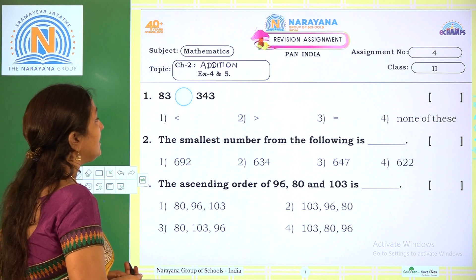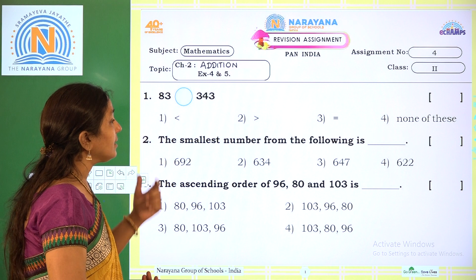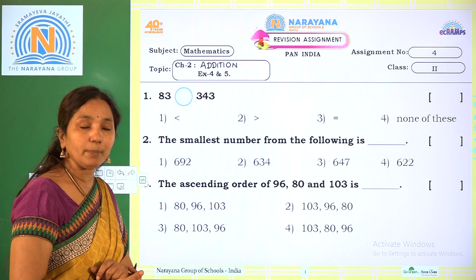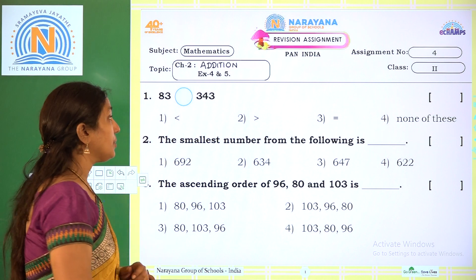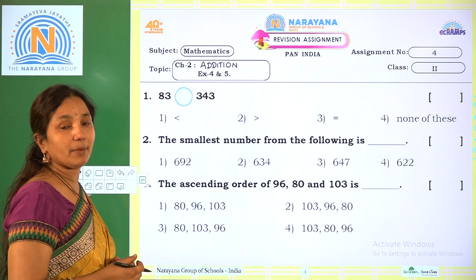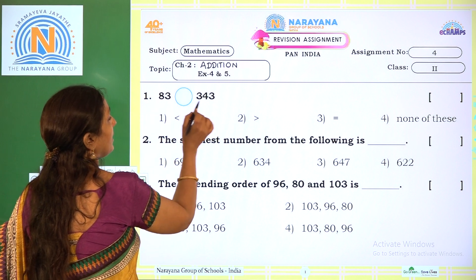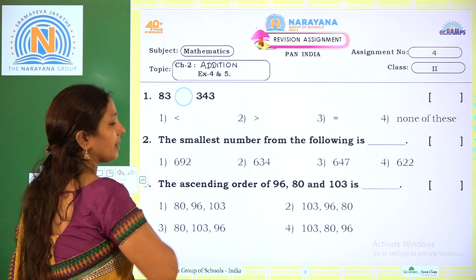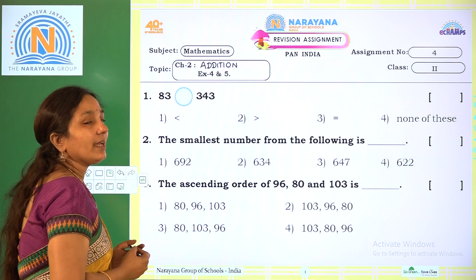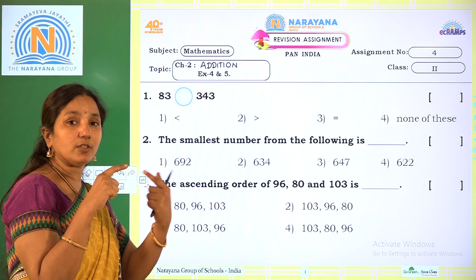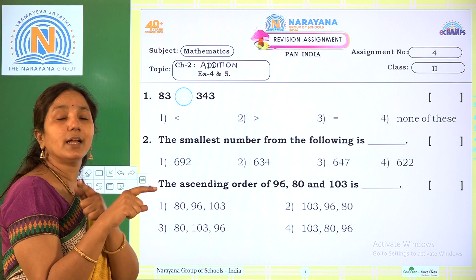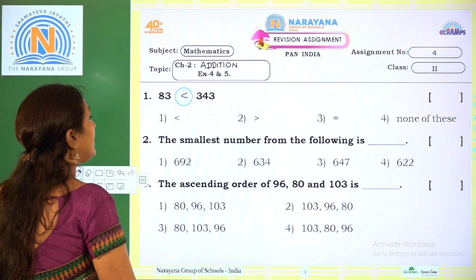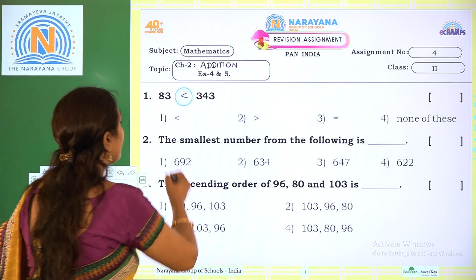Coming to the first one: 83 and 343. The options given are less than, greater than, equal to, and none of these. We have to compare the given numbers. First, while comparing, we count the number of digits. Here 83 is a 2-digit number and 343 is a 3-digit number, so 343 is obviously greater. The open side of the symbol faces the greatest number and the closed side faces the smallest. So 83 is less than 343. The correct option is Option 1.